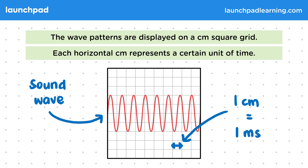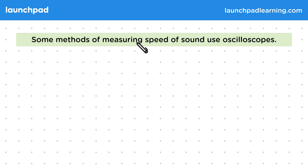Now let's look at the main application of oscilloscopes at GCSE. Some methods of measuring speed of sound use oscilloscopes. In your exam, you may be asked to recall and describe a method of measuring the speed of sound. This is only one way of doing this. You don't need to give this exact method or even one using an oscilloscope. We'll focus on the simplest way of using an oscilloscope.